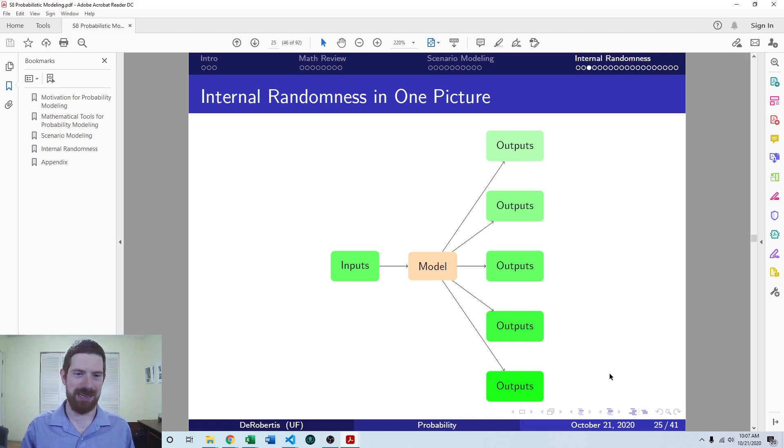The outputs only change when you change the inputs. That's a deterministic model. Our model is no longer deterministic here. We keep running with the same inputs and we get different outputs every time. That's usually what you're going for when you're building an internal randomness model.